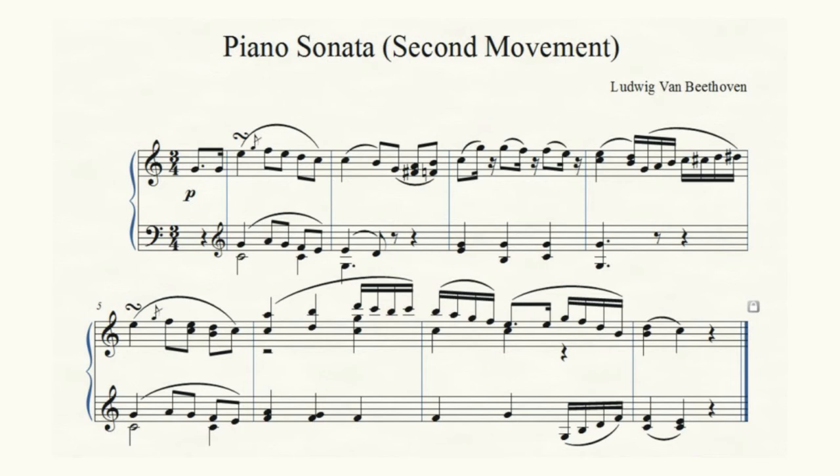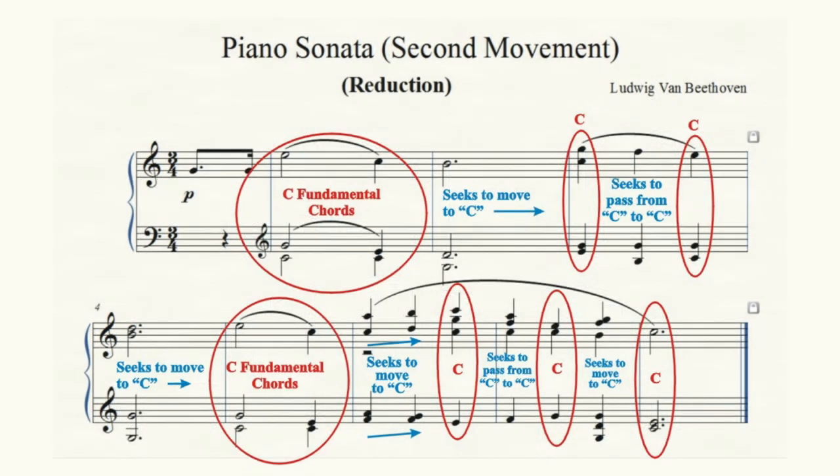In order to more clearly see the various musical relationships, we can reduce the music to a more essential form by removing some of its ornamentation. We can now observe how often the C fundamental, or its chord, occurs as indicated within the red circles.